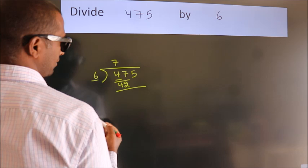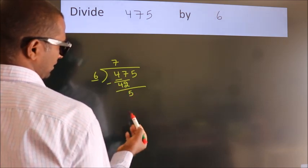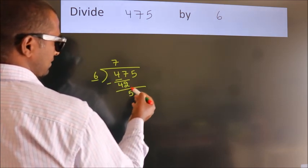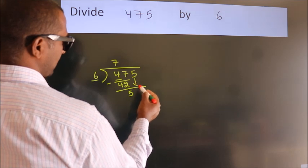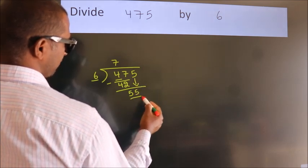Now we should subtract. We get 5. After this, bring down the beside number. So 5 down. So 55.